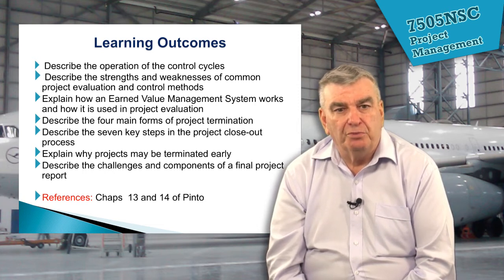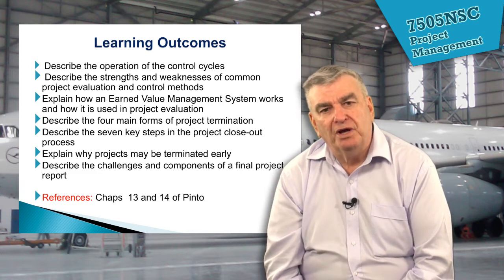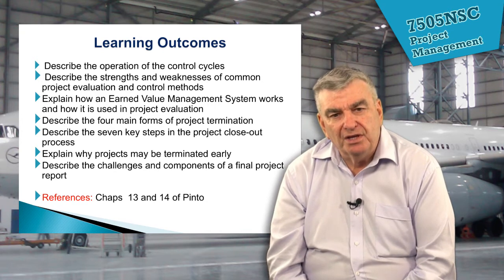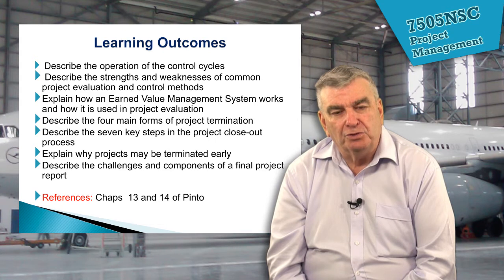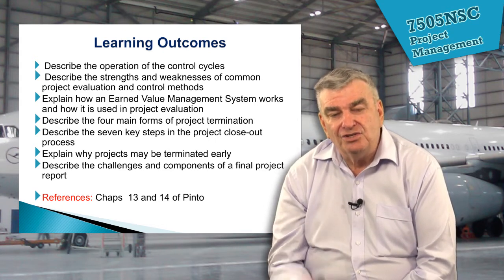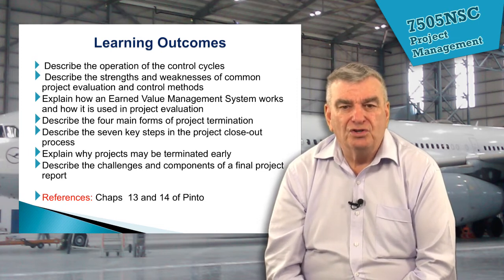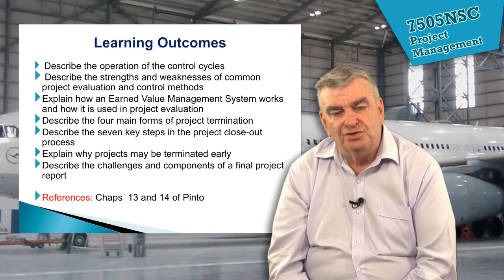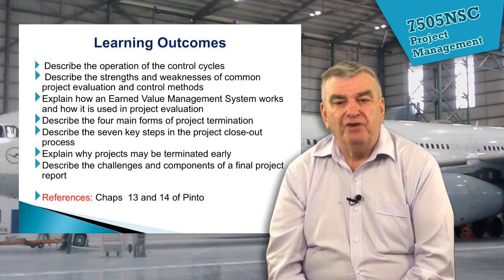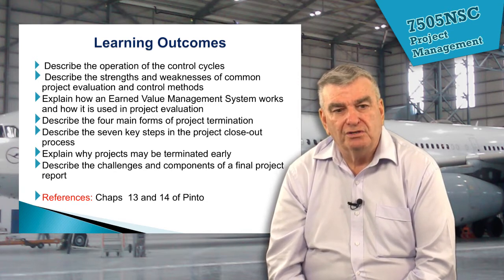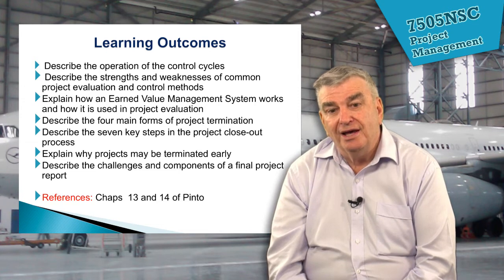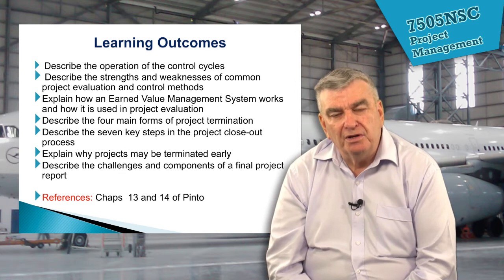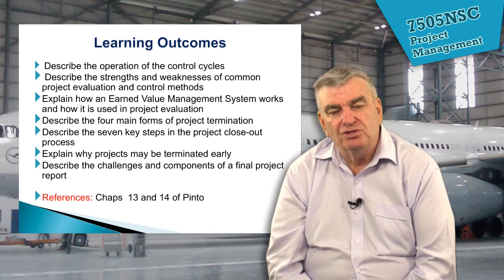We're going to be talking about the strengths and weaknesses of common project evaluation and control methods, of which there are a whole range a project manager can use. We're going to be explaining how an earned value management system works — a technique used in a lot of complex projects today, especially in the aerospace industry — and how it gives instant feedback to a project manager on how well the project is going. We're also going to cover the four different types of project termination, the seven steps in the project closeout process, why projects may be terminated early, and the challenges and components of a final project report.